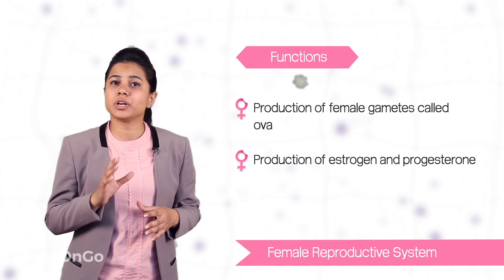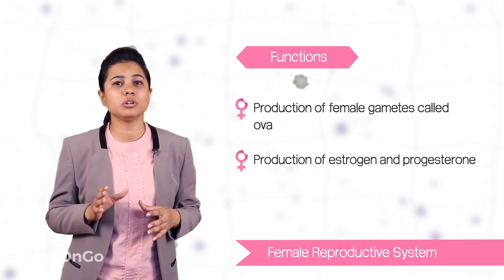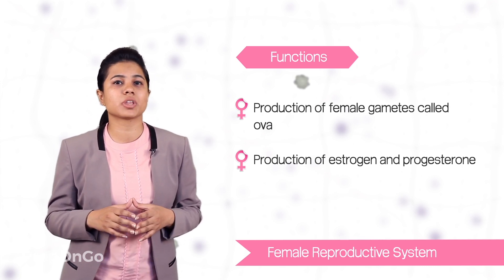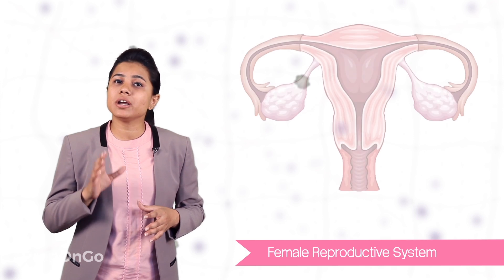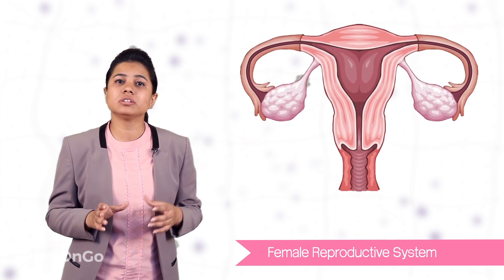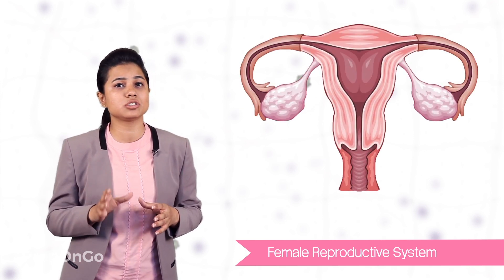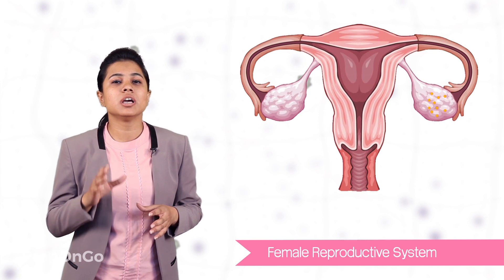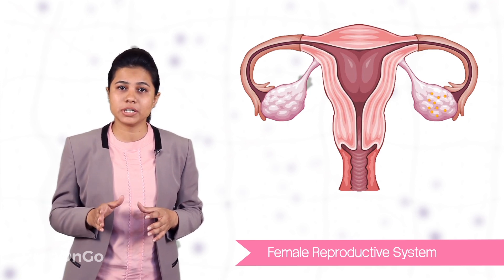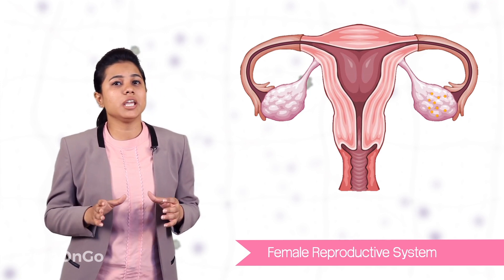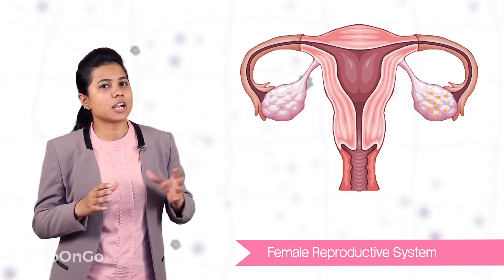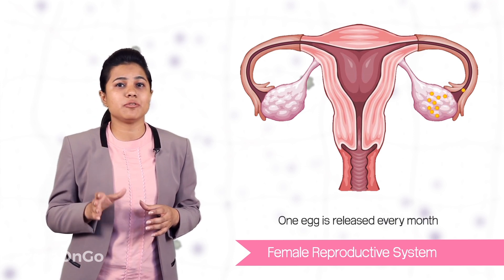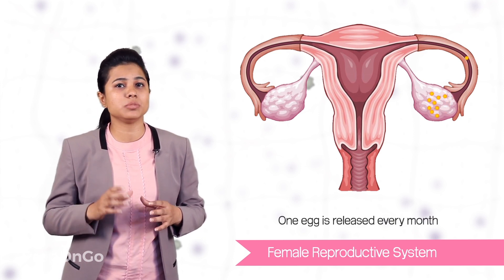Another function is to produce hormones which are estrogen and progesterone. When a girl is born, these ovaries consist of many immature eggs and on reaching the age of puberty, these eggs start to mature. One egg is released every month from this ovary.